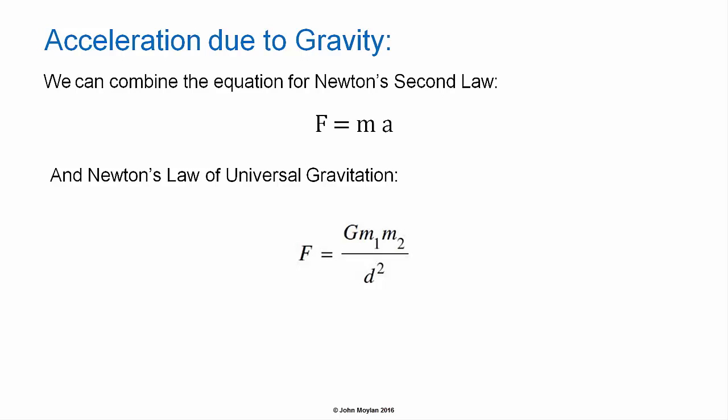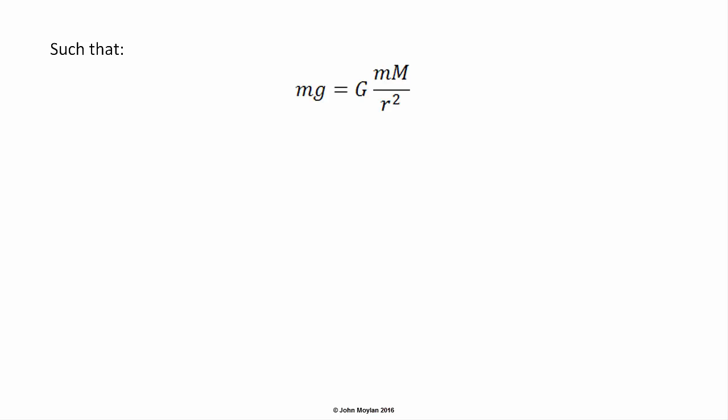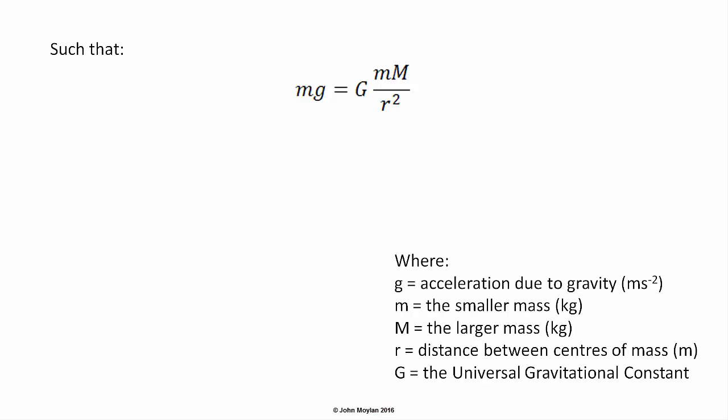We can combine Newton's second law, F = ma, and Newton's law of universal gravitation, F = G·m1·m2 / d², to derive an expression for the acceleration due to gravity. This gives m·g = G·m·M / R², where m and M are the smaller and larger mass respectively and R is the distance between their centres of mass in metres. Rearranging and simplifying: g = G·M / R², where g is acceleration due to gravity in m/s², M is the larger mass in kilograms, R is the distance between centres of mass in metres, and G is the universal gravitational constant.